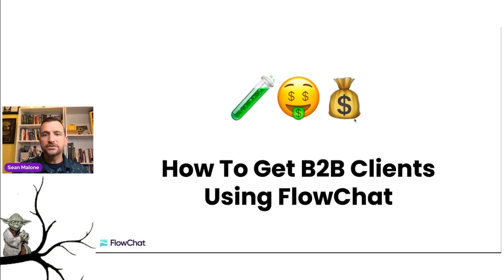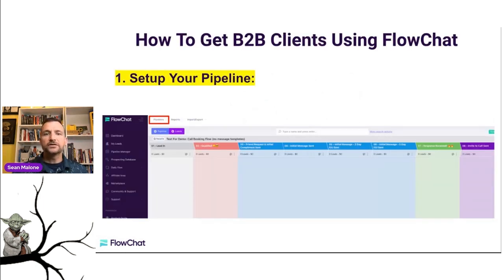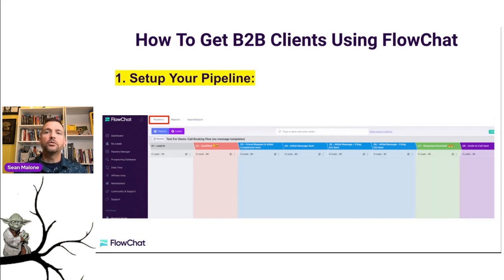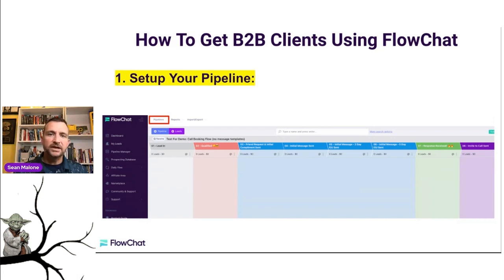So what's the first thing to do when we're using FlowChat to collect and find B2B clients? It's very simple. Once we get into the FlowChat software, the first thing we're gonna do is we're gonna set up a quick pipeline. This pipeline will manage our prospects once we find them from the social media platform. All you do is go into your software, click on the pipelines dropdown where the little red box is, and then select new pipeline, or you can use one of our templates.